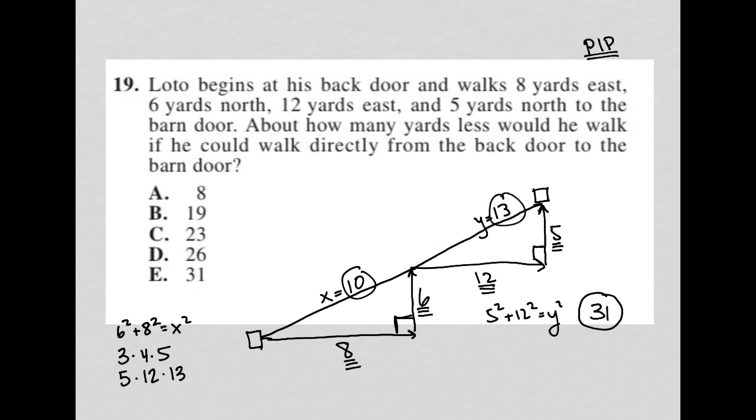So the distance from door to door is 10 plus 13, which is 23 yards, which means that the difference between the 31 and the 23 must be 8 yards. So how many yards less would he walk? He'd walk 8 yards less.